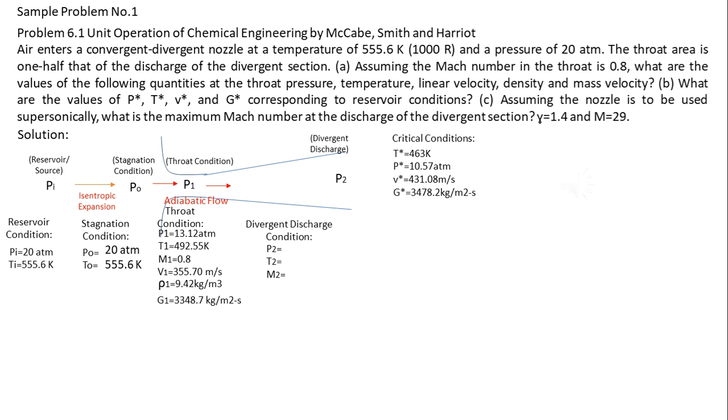And finally, solving for Mach number at the discharge using these equations, where the area of the throat is one half of the discharge area of the divergent section.